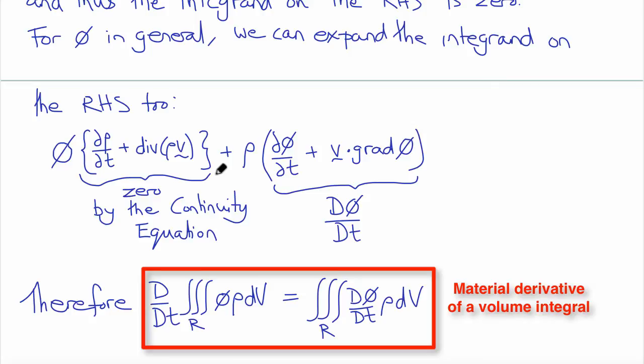I don't think it's important to memorize this result. I'm just showing you this so that you appreciate that there was no simplification, error, or approximation in the derivations of the conservation of linear and angular momentum. Thank you.